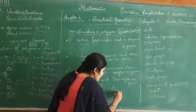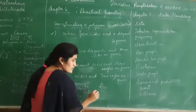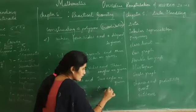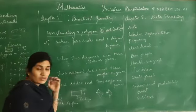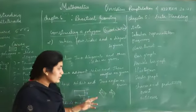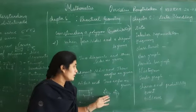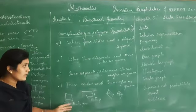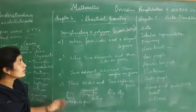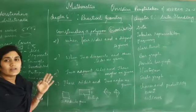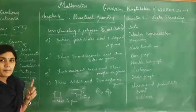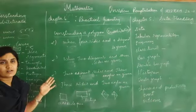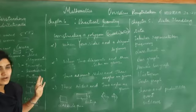If a rhombus is given, a diagonal and a side, or two diagonals, are sufficient to construct it. It depends on the given data. Only construction with ruler, compass, pencil, eraser, and protractor is used to construct these practical geometry figures.